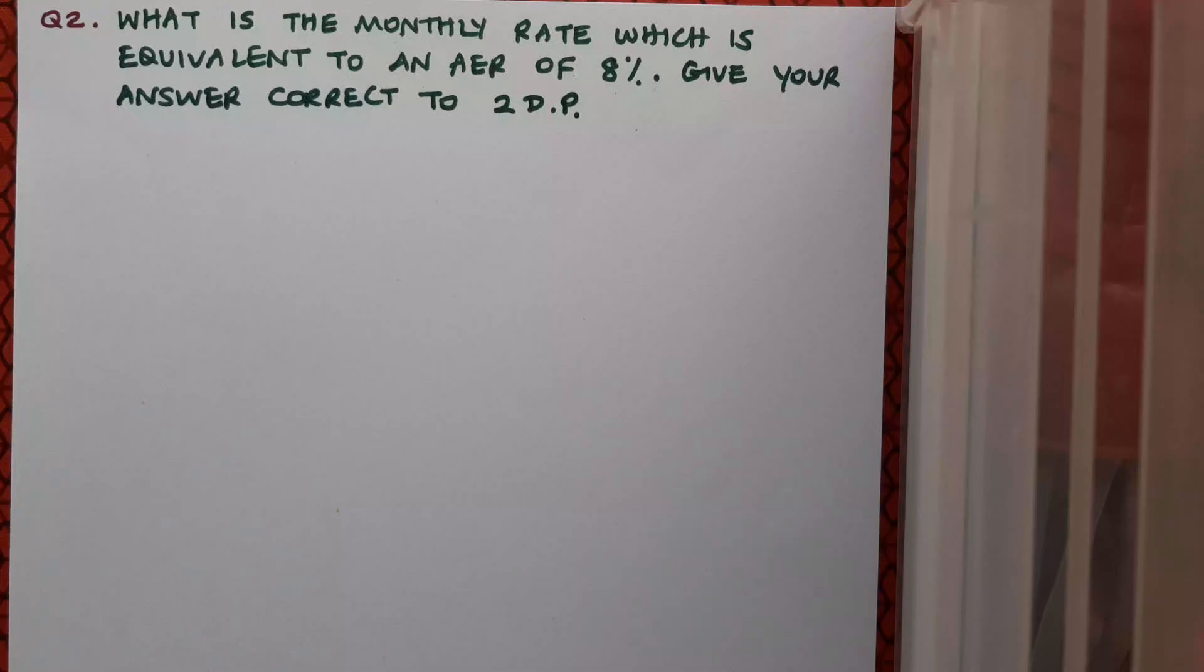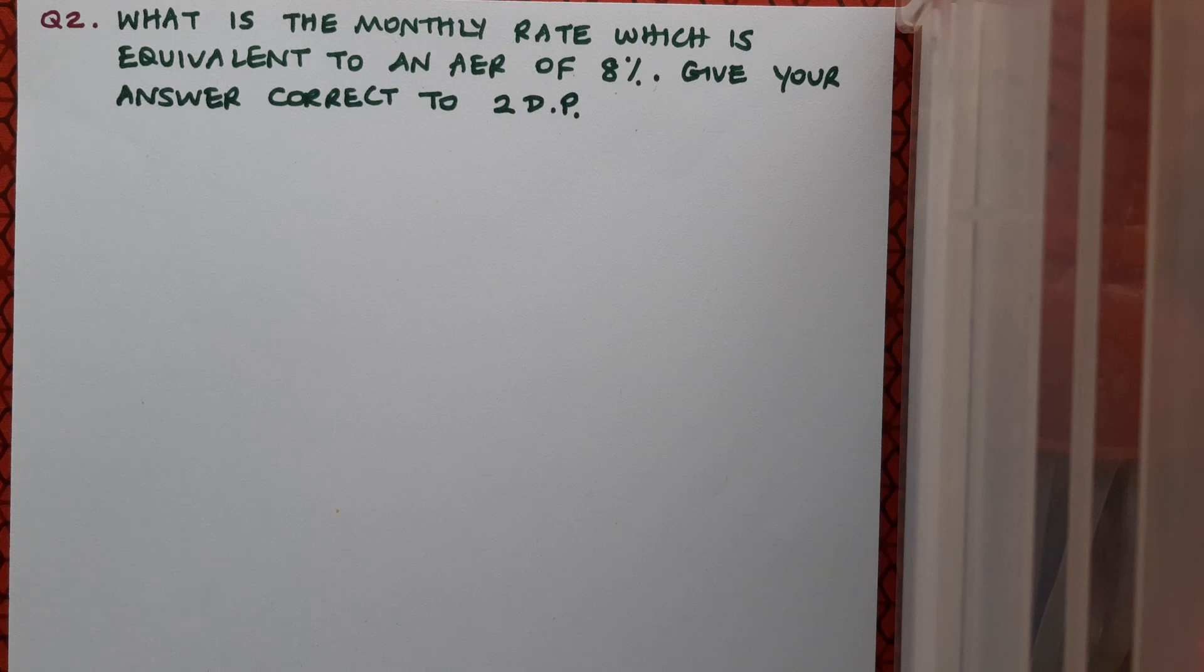So here's your question. What is the monthly rate which is equivalent to an AER of 8% and give your answer correct to two decimal places. Pause the video here, complete the question and then play and see if you're correct.